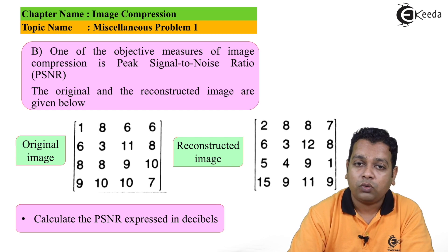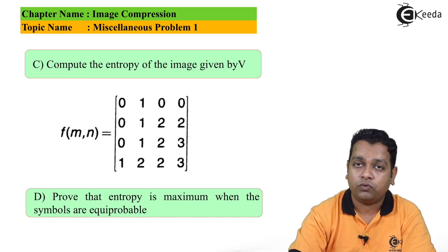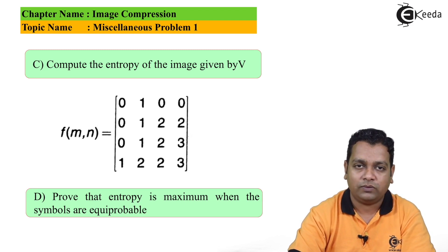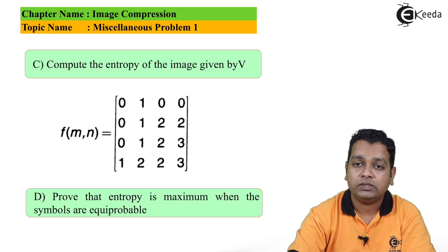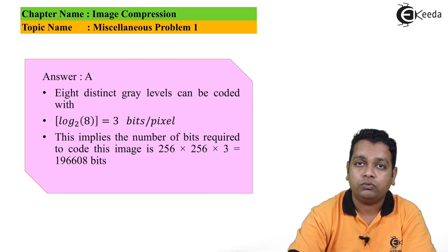The question for Part B is to calculate the PSNR expressed in decibels. Part C asks to compute the entropy of the image f(m,n) of dimensions 4 by 4, with rows: [0 1 0 0], [0 1 2 2], [0 1 2 3], and [0 2 2 3]. Part D asks to prove that entropy is maximum when the symbols are equiprobable.